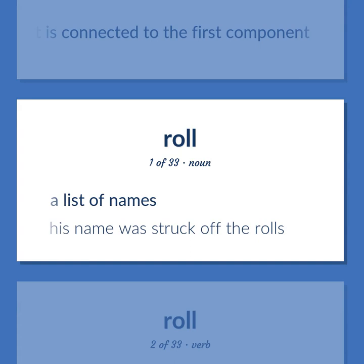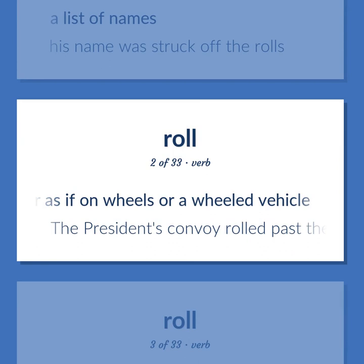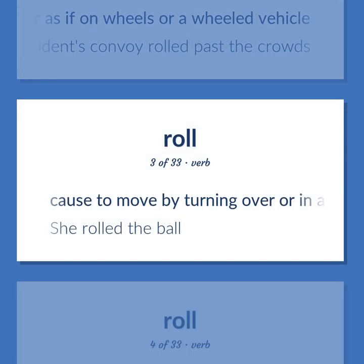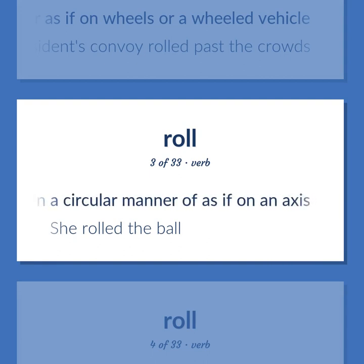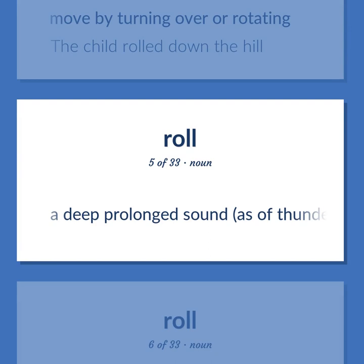ROLL: A list of names — his name was struck off the rolls. Move along on or as if on wheels or a wheeled vehicle — the president's convoy rolled past the crowds. Cause to move by turning over or in a circular manner or as if on an axis — she rolled the ball. Move by turning over or rotating — the child rolled down the hill. A deep prolonged sound, as of thunder or large bells.